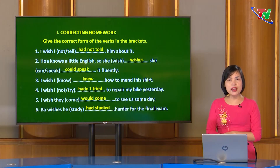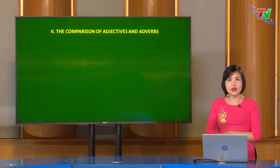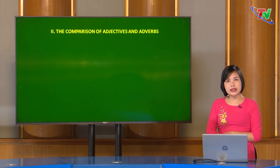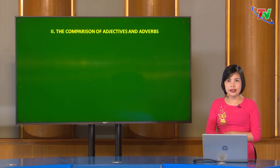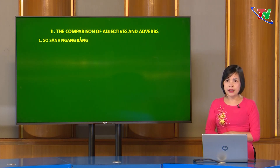Bây giờ chúng ta sẽ cùng nhau đến với bài học của ngày hôm nay: The Comparisons of Adjectives and Adverbs - So sánh của tính từ và trạng từ. Trong chương trình tiếng Anh lớp 9, chúng ta đã biết về các dạng so sánh của tính từ và trạng từ với so sánh ngang bằng, so sánh hơn và so sánh hơn nhất. Chúng ta sẽ vào phần thứ nhất với so sánh ngang bằng.